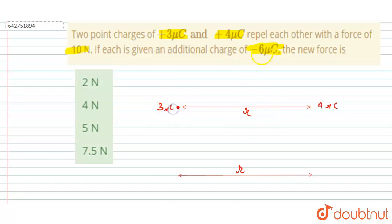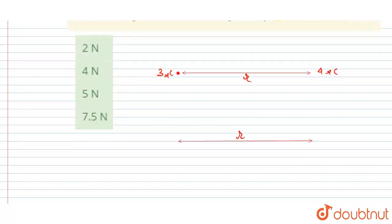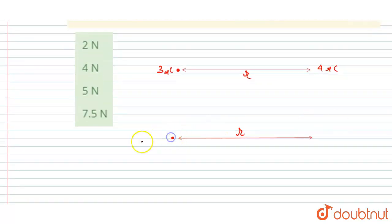And if you add -6 microcoulombs to both, then I will write -3 microcoulombs, and here 4 minus 6, so I will write -2 microcoulombs. 3 minus 6, this is right.